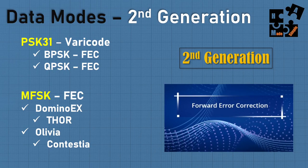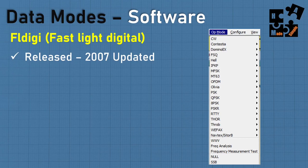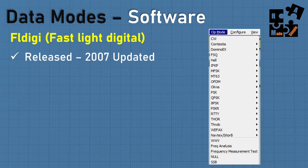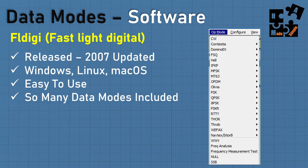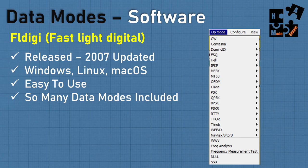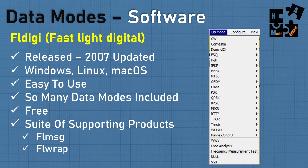For those who haven't watched my last video on FL Digi — setup, best practices, and everything — the link is in the description below. FL Digi is really good software, released in 2007, continually updated, and can operate on Windows, Linux, and Mac OS. It's easy to use. There are so many data modes included — and within each, variants, sub-modes, or format speeds. It can be overwhelming, but that's what this video is trying to do: demystify it, so you know what Olivia is about and when to use it. And it's free, with a suite of supporting products like FL Message and FL Wrap.